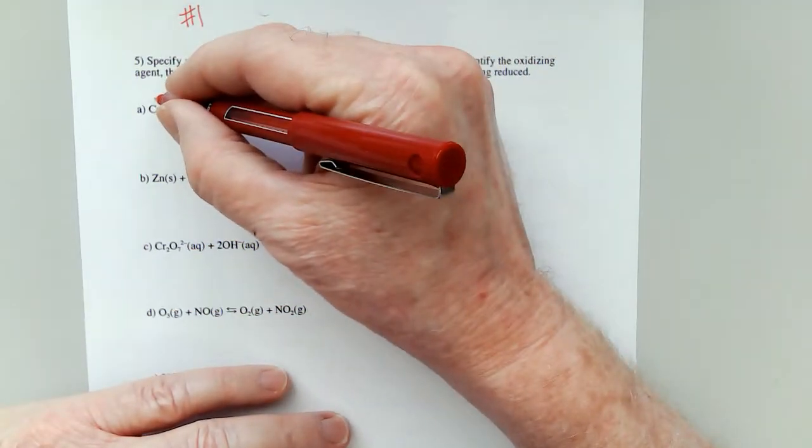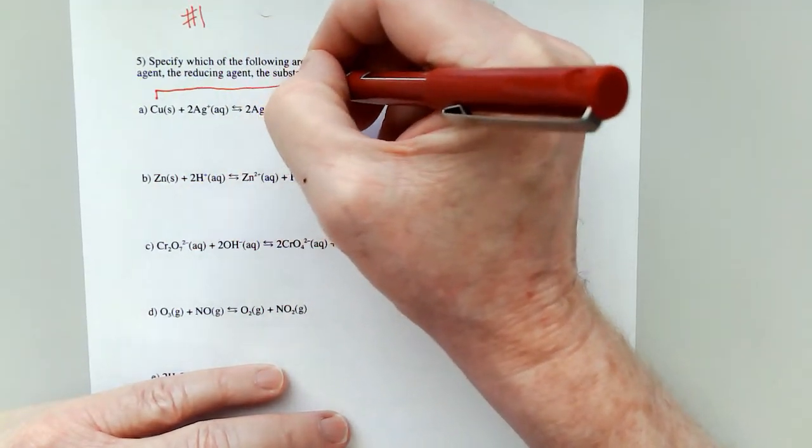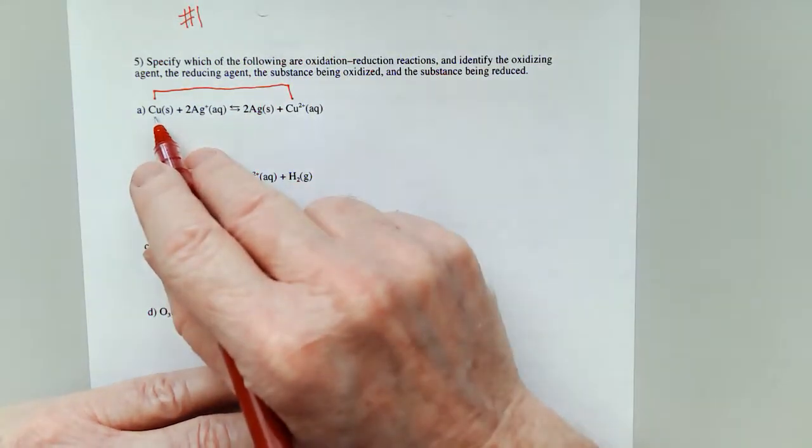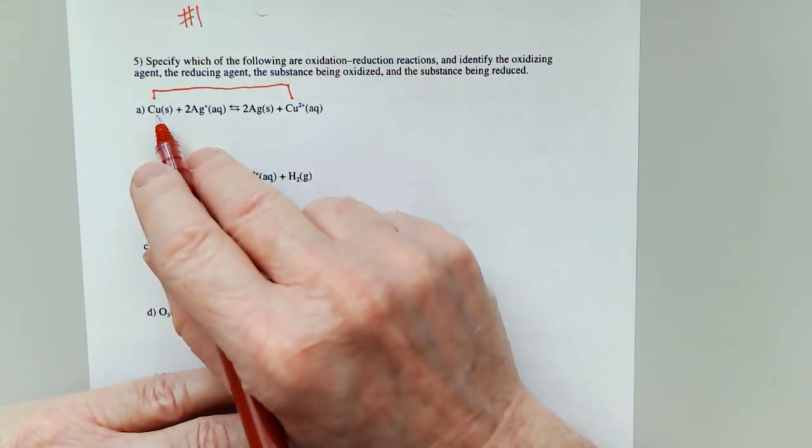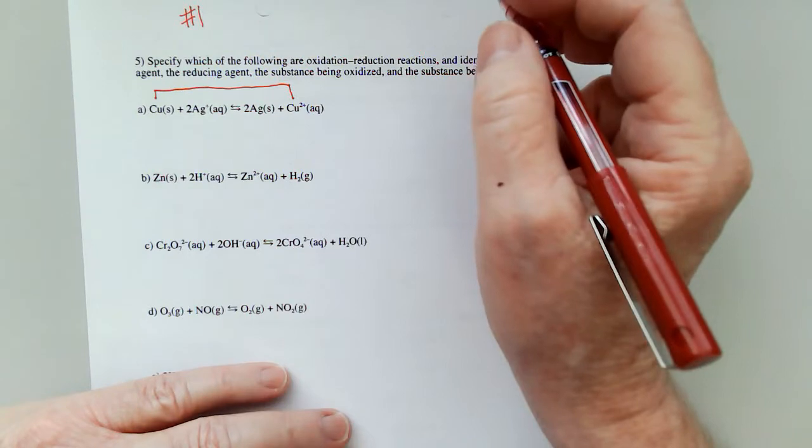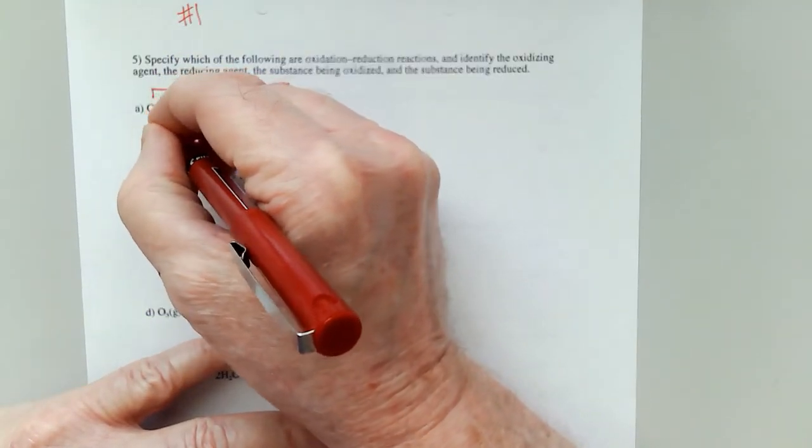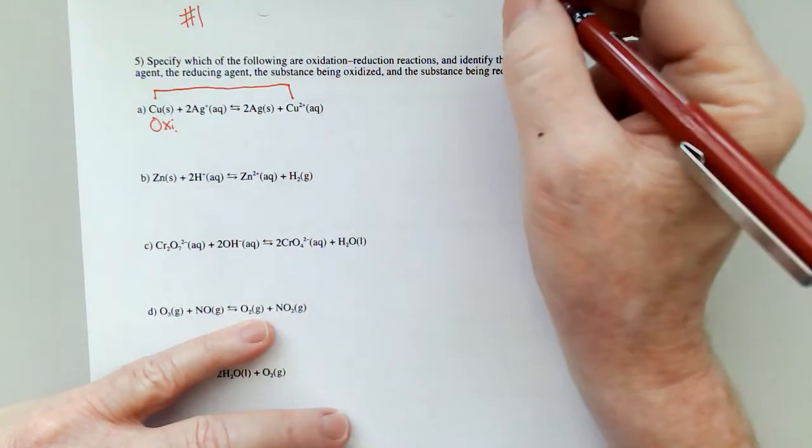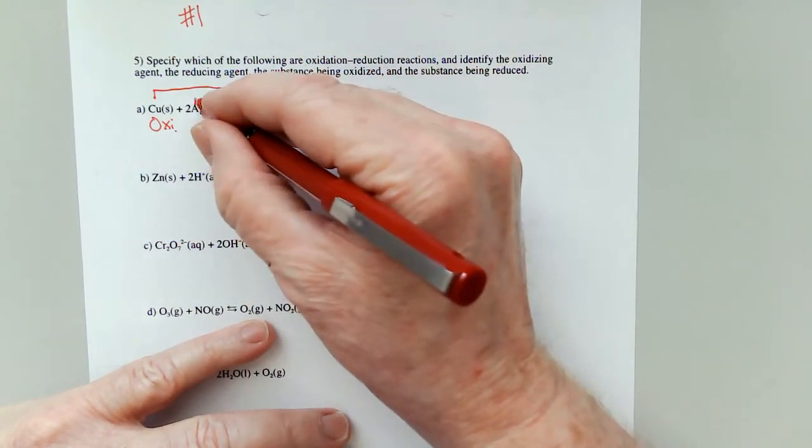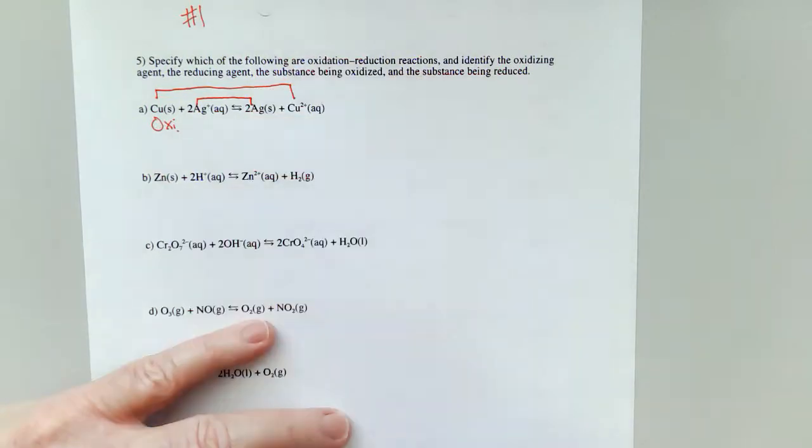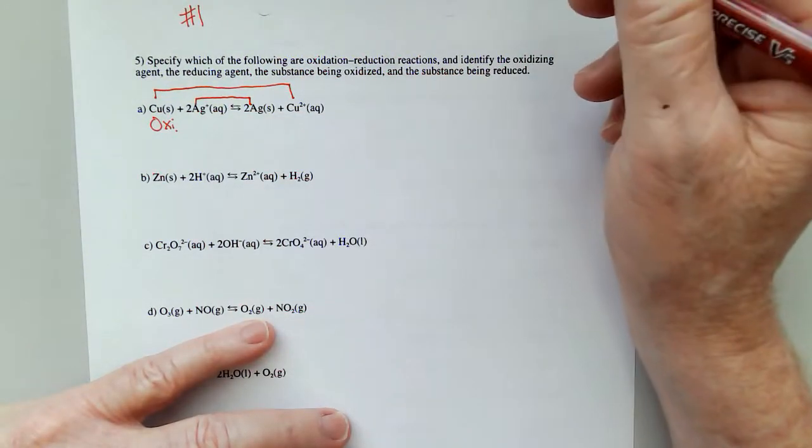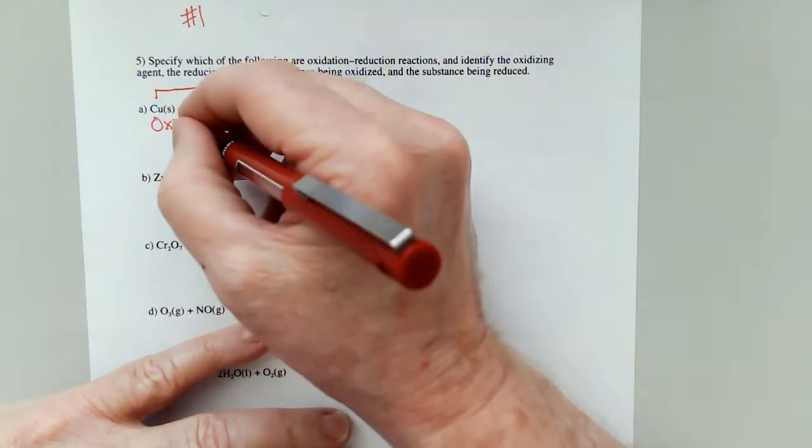So what we're going to do is we're going to look at changes in oxidation number. So copper is going from an oxidation number of zero to a plus two. That means it's losing electrons. That means it is oxidized. And then the silver is going from a plus one to a zero, which means it is gaining electrons. It is reduced.